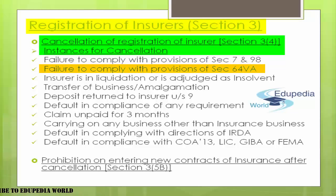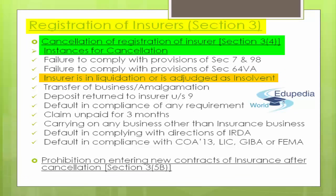Second instance: if you fail at any time to comply with the provisions of Section 64VA, which is about the excess of the value of your assets over the amount of your liabilities—if your liabilities exceed your assets and you fail to comply—your registration can be cancelled. Third instance: if the insurer is in liquidation or has been adjudged insolvent and cannot pay back policyholders, registration can again be cancelled.